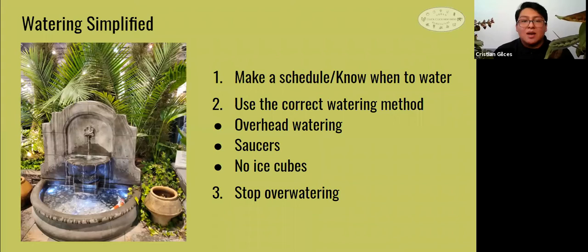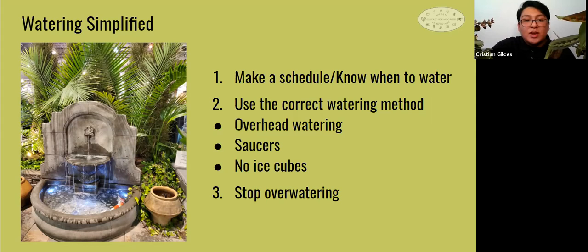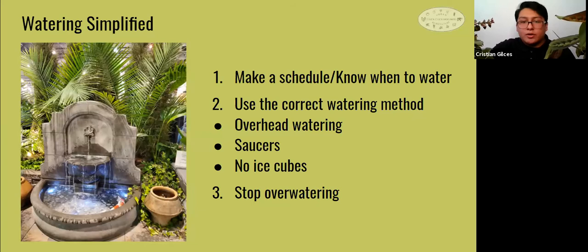The final step is to stop overwatering. When you water, let your plant fully drain all the excess water out — this is why you need pots with drainage holes. If your plant's soil never gets slightly dried out between waterings, you know you're overwatering. Your plant will also give you signs: when the bottom leaves start yellowing or rotting, that's a key sign of overwatering. The plant leaves could also start getting little brown spots all over, which means the cells of your plant are actually exploding and dying.